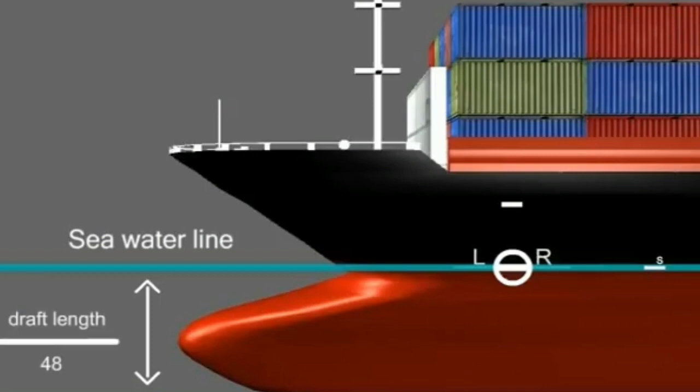The winter load line is 1/48th of the summer load draft, placed below the summer line.